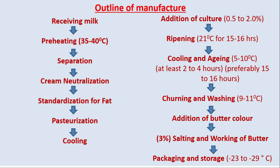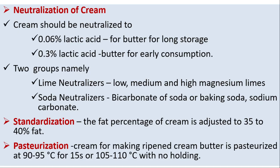The butter manufacturing outline: receiving milk, preheating, separation, cream neutralization, standardization for fat, pasteurization and cooling, addition of culture (ripening), cooling and aging, churning and washing, addition of butter color, salting and working of butter, packaging and storage. Neutralization: cream should be neutralized to 0.06% lactic acid for long storage or 0.3% lactic acid for early consumption. Neutralizers include lime neutralizers (low, medium, and high magnesium limes) and soda neutralizers (bicarbonate of soda/baking soda and sodium carbonates).